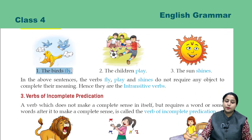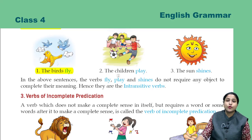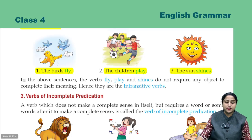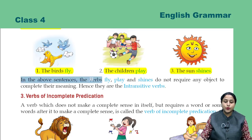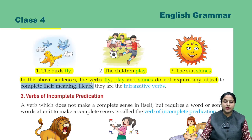First: 'The birds fly.' The birds are flying — this is already a complete sentence; it needs no object. Second: 'The children play.' Third: 'The sun shines.' In the above sentences, the verbs 'fly', 'play', and 'shines' do not require any object to complete their meaning. Hence, they are the intransitive verbs.